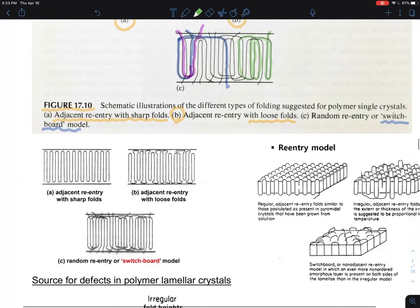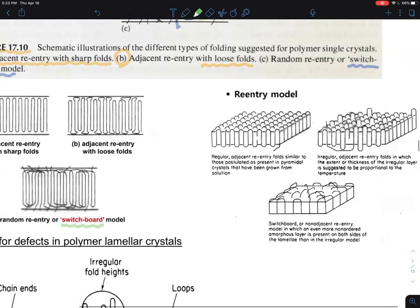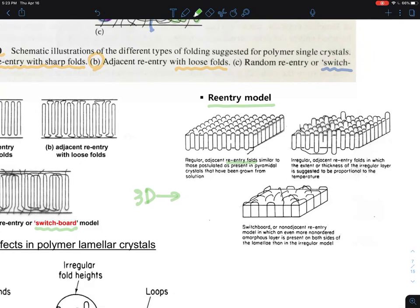I found other references trying to highlight the switchboard model in a much easier to understand way than our textbook does. So I'm here to share that with you. This is a lot more 3D representation of re-entry model - what they call the re-entry model fold with a sharp re-entry fold with a loose end. And it's a lot more like a switchboard model.